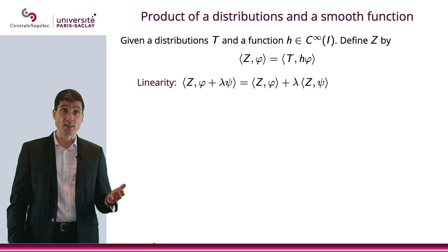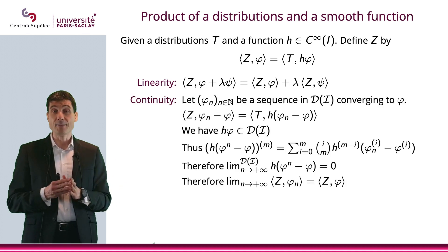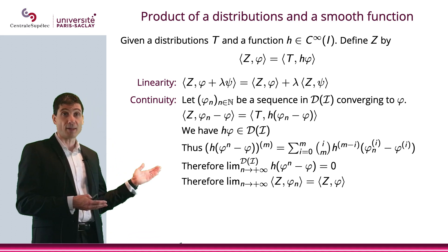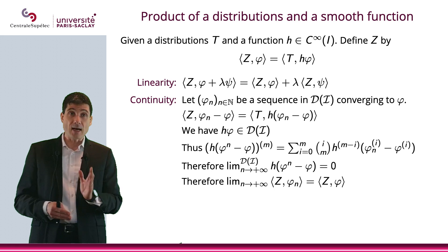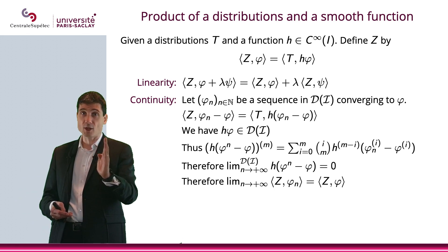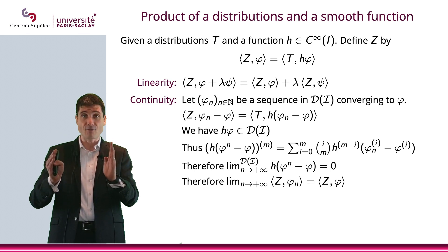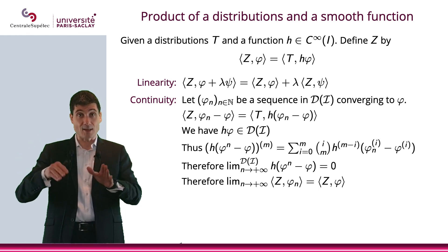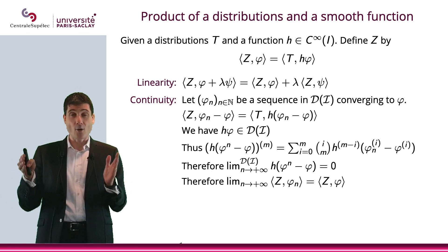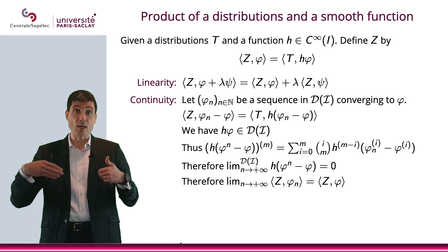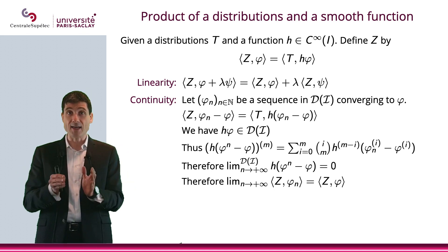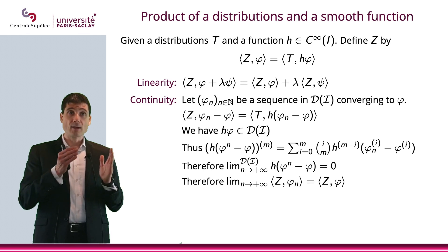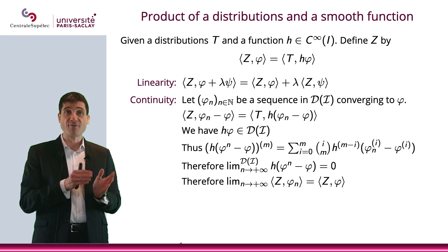Is it continuous? Let's look. Consider a sequence φₙ in D(I) converging to φ. Then apply Z to φₙ minus φ, which is T applied to h times (φₙ minus φ). Now, if you have a function h, which is C∞, and if φ is C∞, the product is C∞. In addition to this, φ is with compact support, which means it's zero outside of this compact support, right? So when you multiply h and φ, then it will also be with compact support, which means that hφ will be a bump function. It will be in the space of test functions.